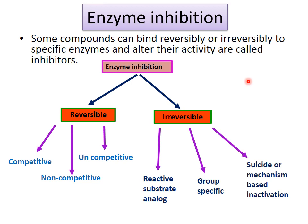There are some substances which alter the activity of an enzyme. These substances are known as inhibitors, and their action is known as inhibition. A compound can bind reversibly or irreversibly to a specific enzyme and alter its activity. Enzyme inhibition is of two types: reversible inhibition and irreversible inhibition.